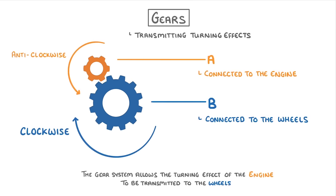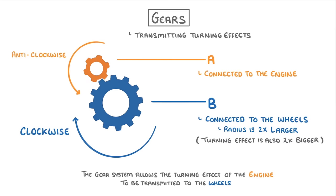The other is that the gears are different sizes, or to be more precise, the radius of gear B is two times larger than that of gear A. And importantly, this will mean that the turning effect of gear B is also two times bigger than the turning effect of gear A. So the turning effect of the engine has been doubled as it's passed to the wheels.